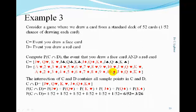Event D contains all cards that are hearts as well as diamonds. According to a previous slide, the intersection of events C and D contains all sample points in both C and D. If we compare all sample points in C as well as D, we see that these events have a Jack of Hearts, Queen of Hearts, King of Hearts, Jack of Diamonds, Queen of Diamonds, and King of Diamonds in common. Therefore, the probability of the intersection of events C and D is equal to the sum of the probabilities of all sample points contained in the event.